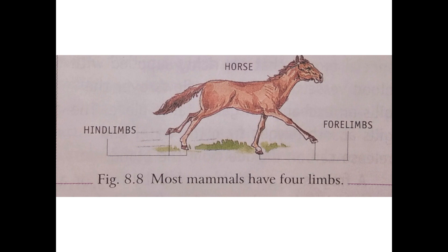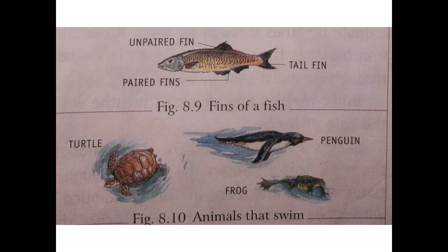Some animals move with the help of one pair of hind limbs only. In the case of water animals, obviously all water animals swim. In the case of fish, they have unpaired fins, paired fins, and a tail fin. With paired fins, fishes move forward; unpaired fins help maintain balance; and with the tail fin, fishes can change direction.